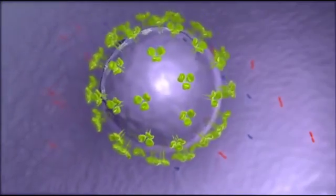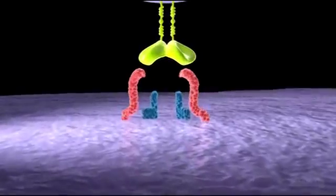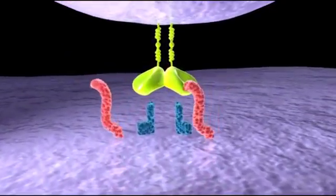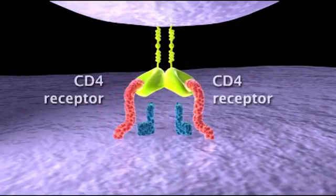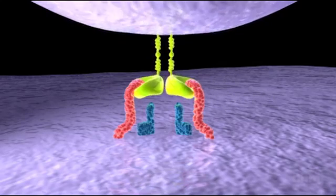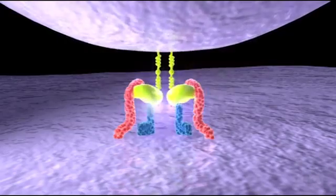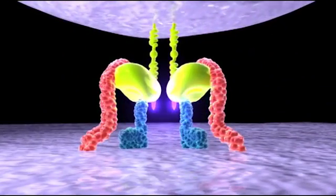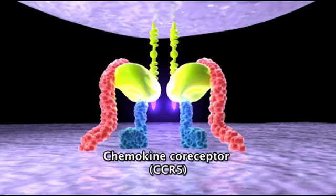The way that it infects T helper cells is that as it comes up to the cell surface, it uses receptors that are on T helper cells and exclusive to T helper cells — the CD4 molecule, which really defines T helper cells. It's a surface receptor that binds to the envelope protein. That causes a conformational change and allows a second receptor to grab hold of the envelope. This is the chemokine co-receptor, also called CCR5.